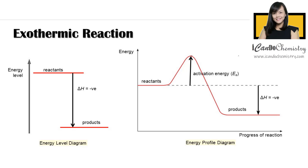The next prominent difference is the presence of activation energy. Take note that activation energy is always pointing up — it is the minimum amount of energy that the reactant particles must have for the reaction to occur. So the activation energy arrow is always pointing up.